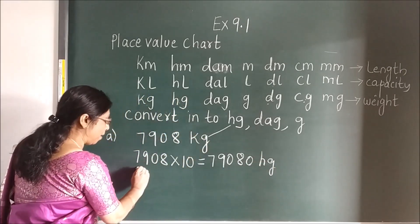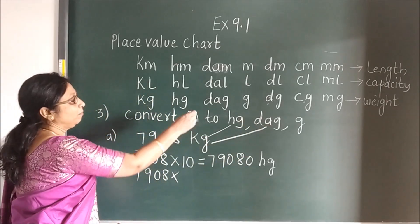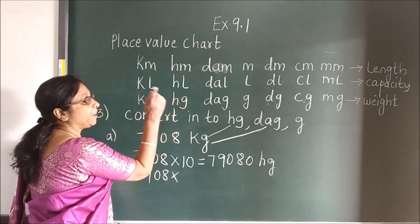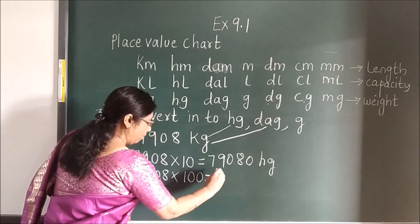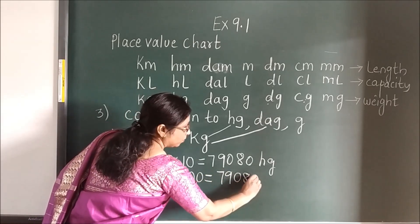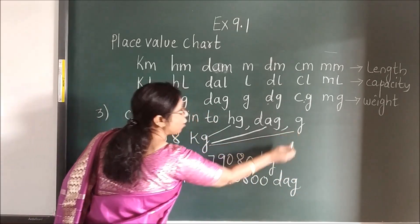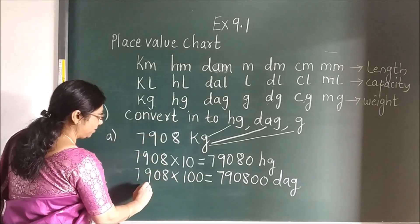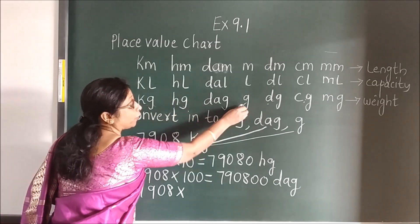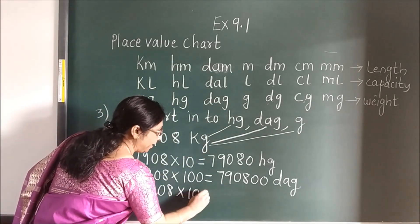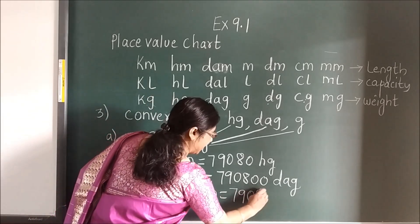Now again with the same number you are moving to DAG. How many times? Right side — and how many times? 1, 2. So multiply by 100. Write the number and place the zeros. This is your DAG. Now again with this number you are moving to G. Same number — how many times? 1, 2, 3 — and right side. So multiply and place 3 zeros. When you write here after multiplication, you get the answer.